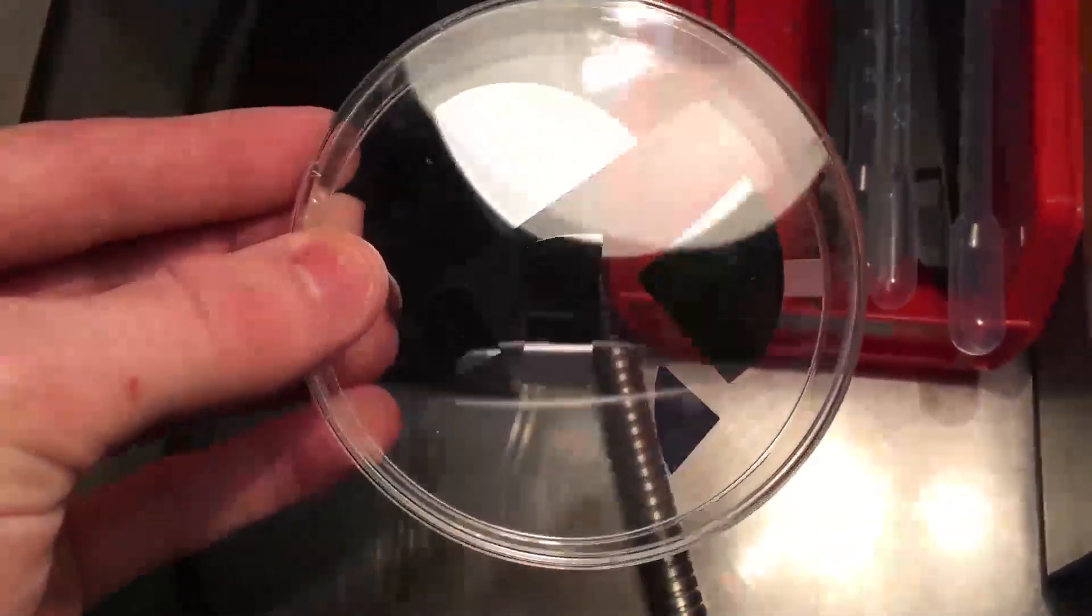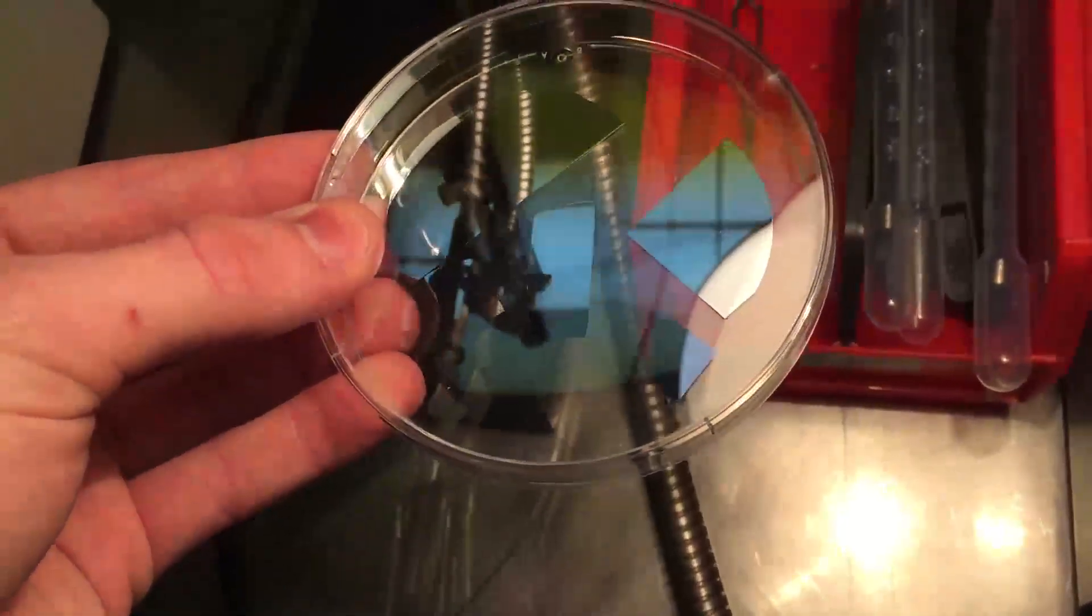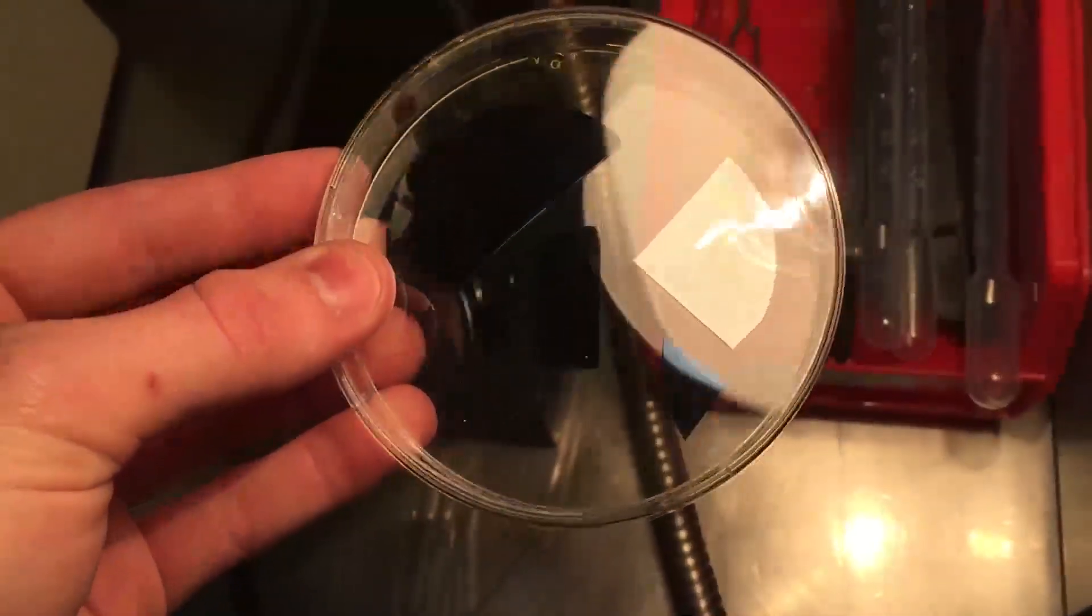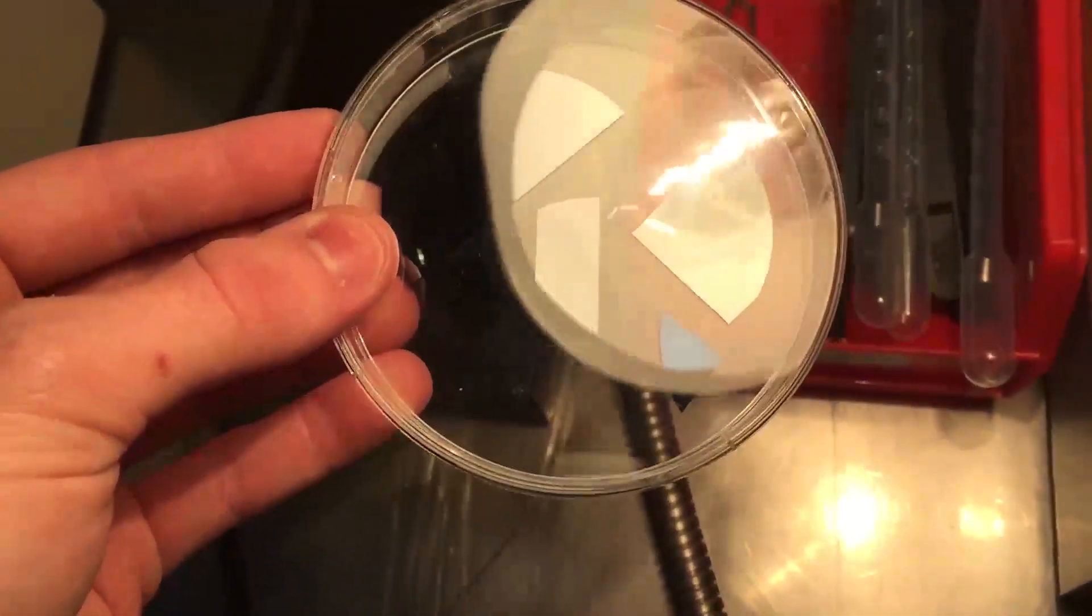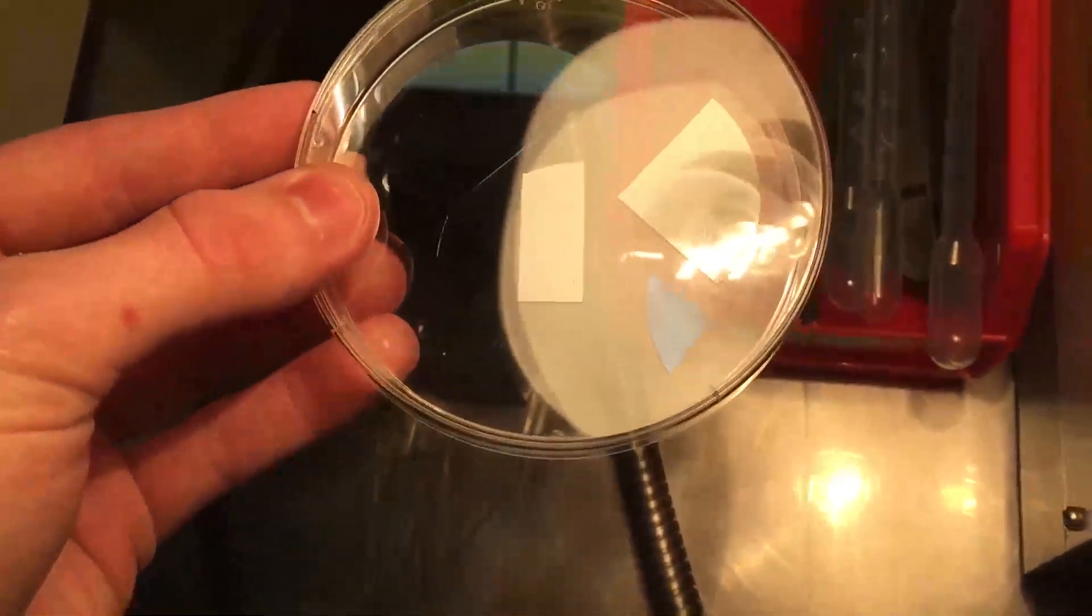This is my first attempt at growing a thermal oxide on a silicon wafer. These pieces here I cleaved earlier from a 2 inch p-type 100 crystal orientation wafer.